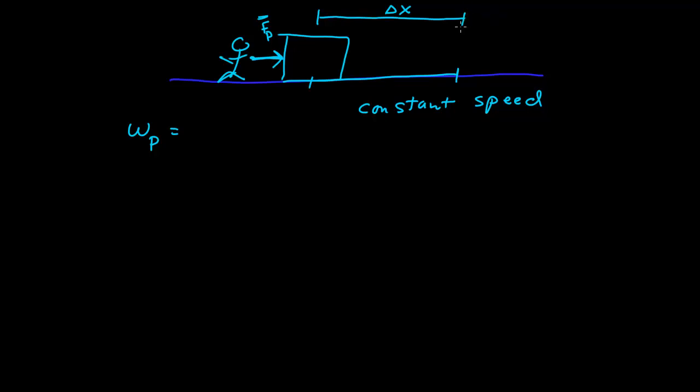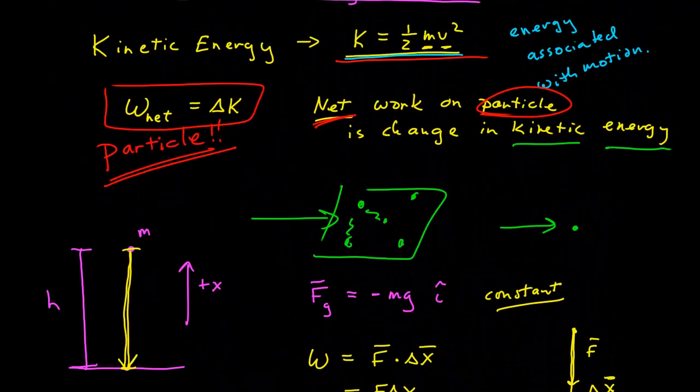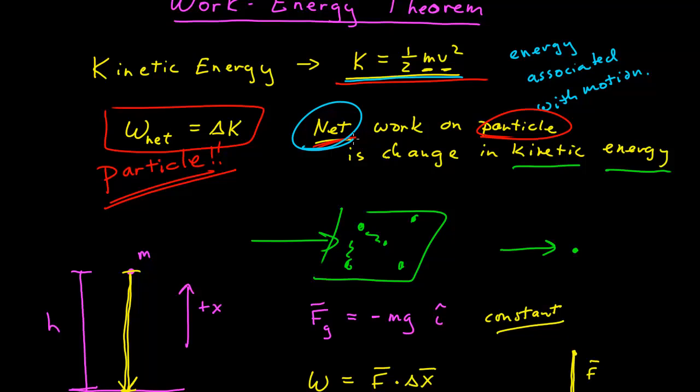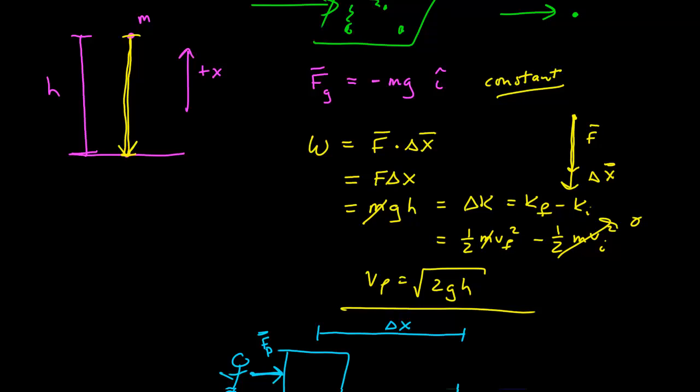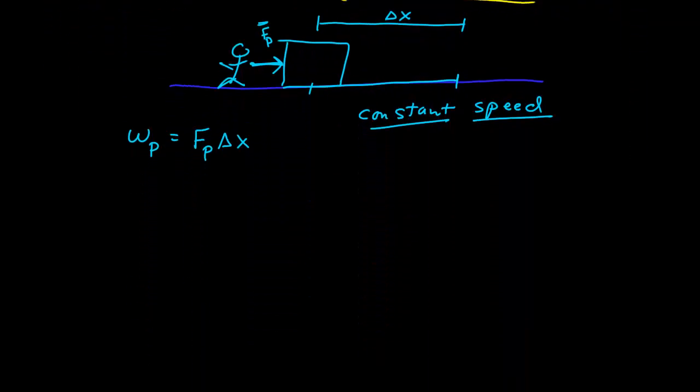The work of the person, so the force, we're going to say the pushing force is horizontal and in the direction of delta x, the distance over which the force acts. So the work done by the person is just the force of the person times its displacement, which is delta x. And so there is work being done by the person. Does that mean the kinetic energy is changed? No. We said it's constant speed. So this is emphasizing this idea that for the work energy theorem, it is the net work that leads to the change in kinetic energy.